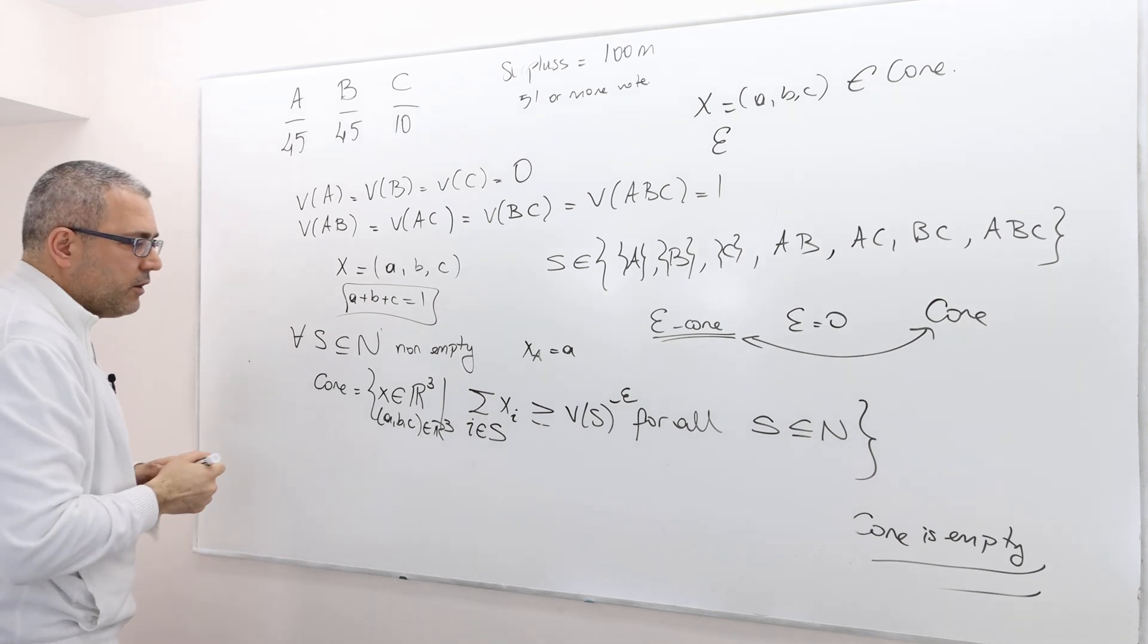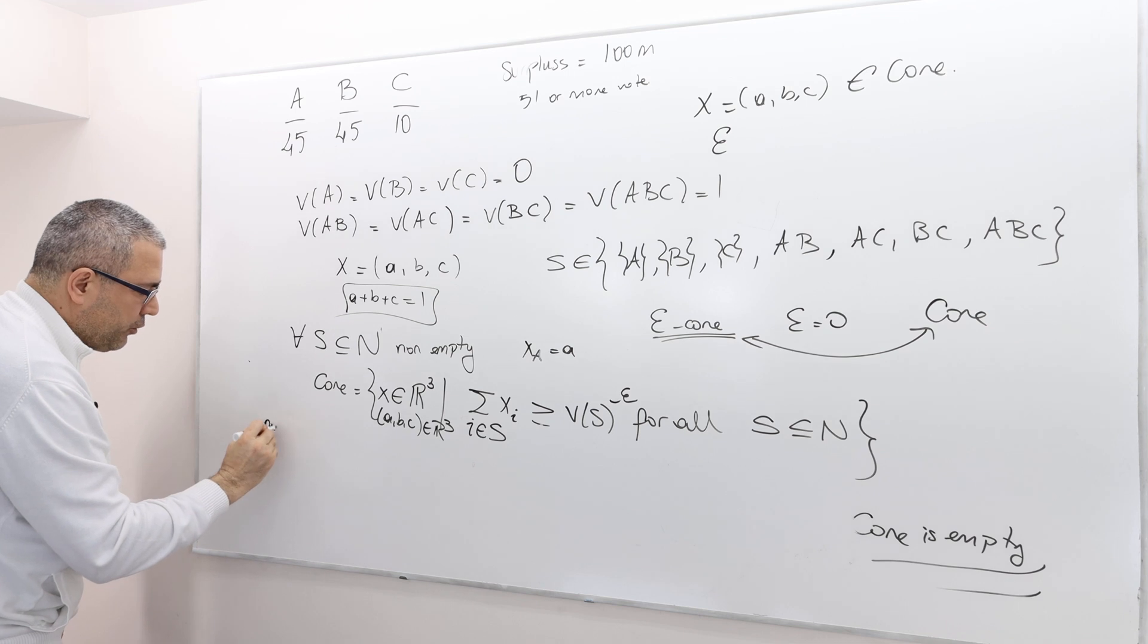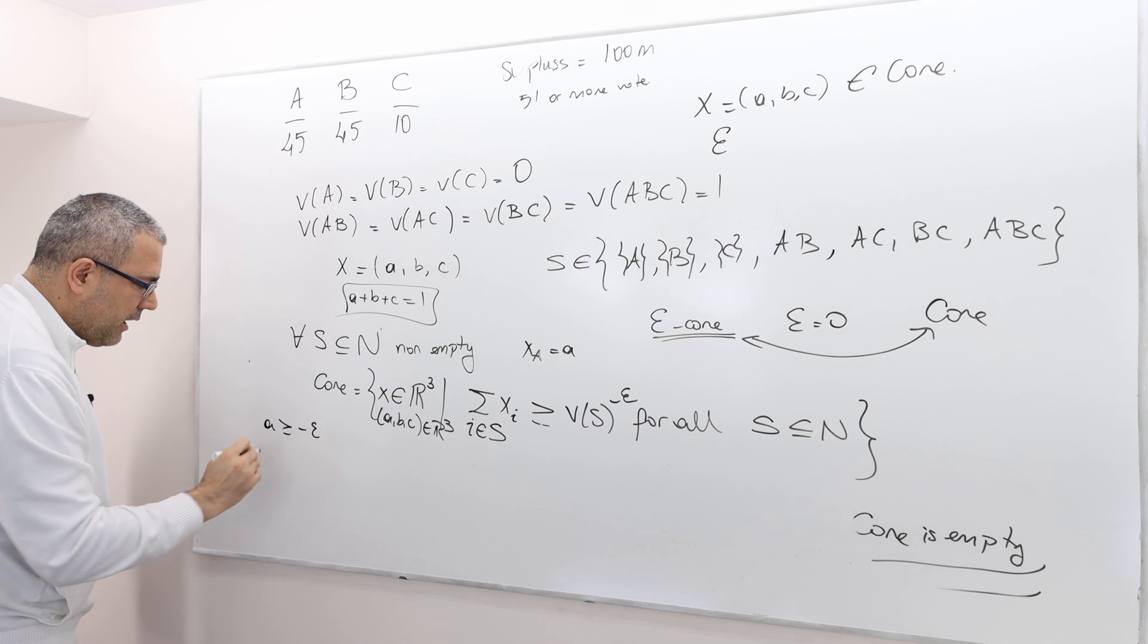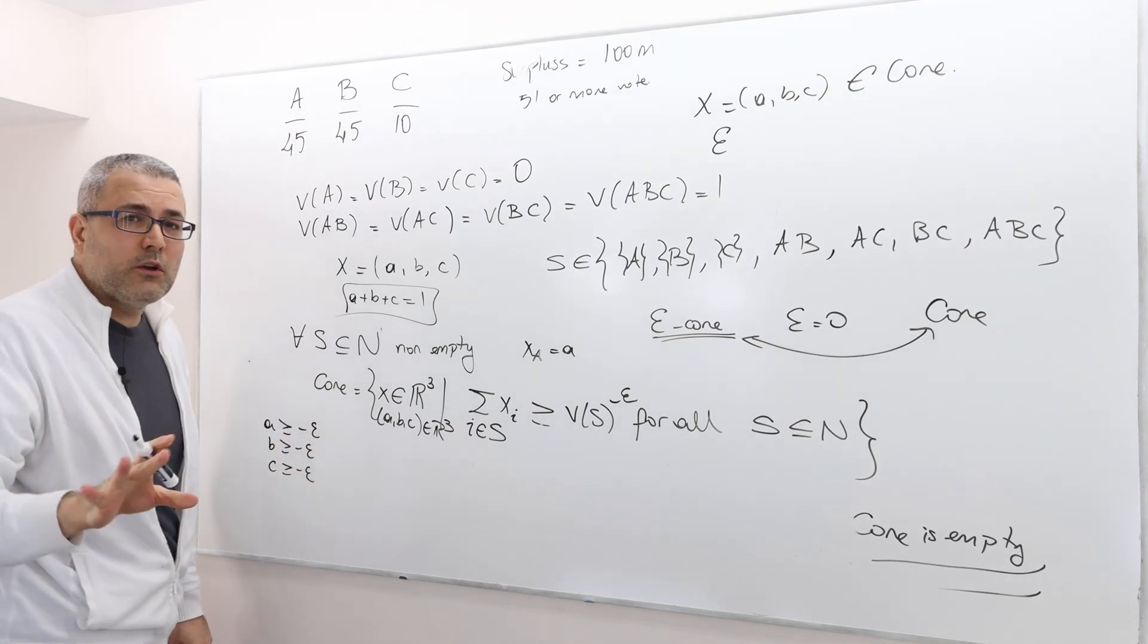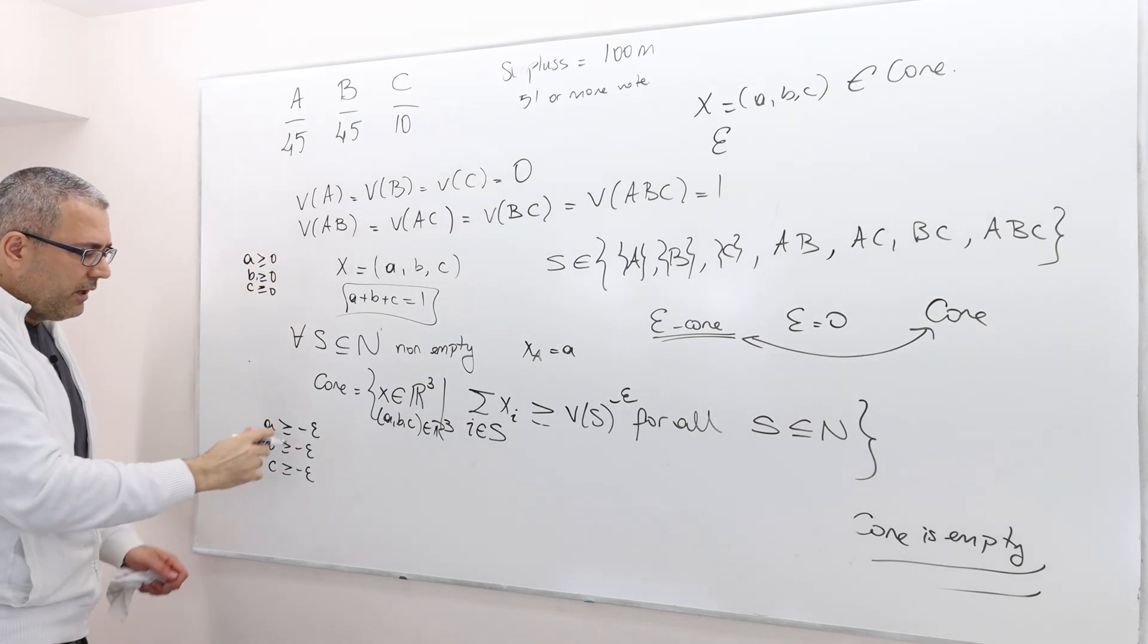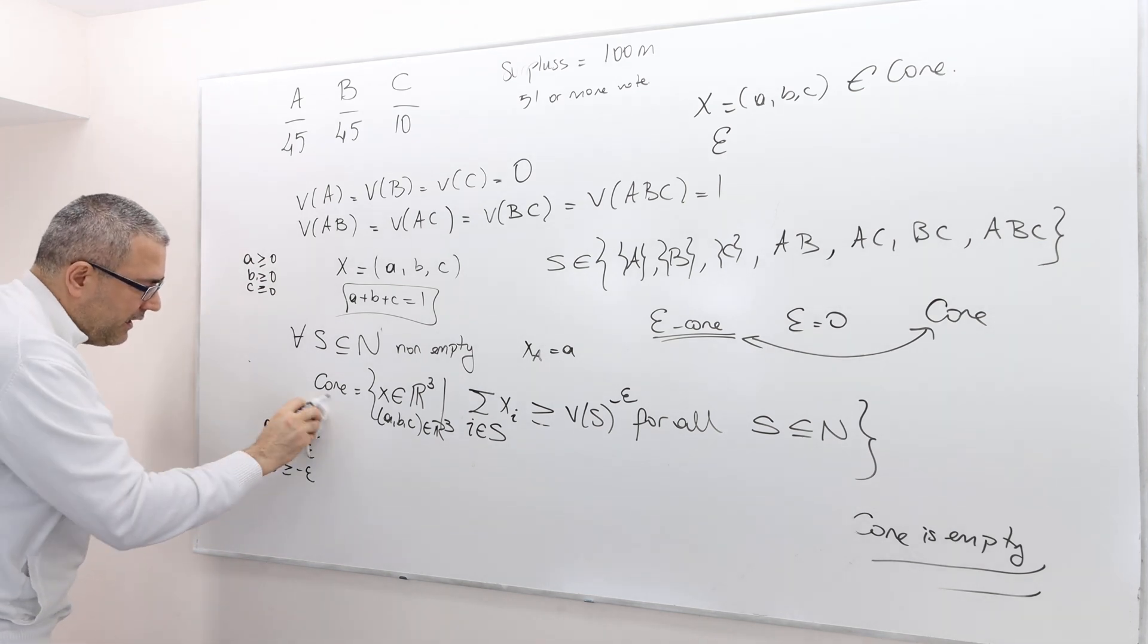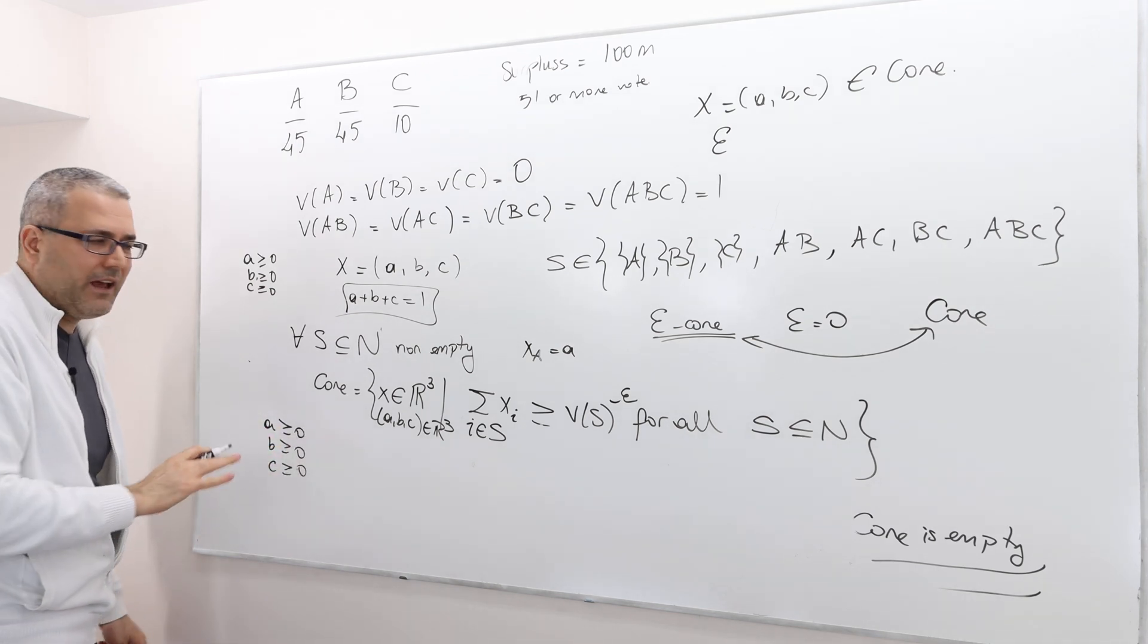Well, it would be the following. So remember, if we consider the singletons, A should be greater than or equal to V of A minus epsilon. So it's minus epsilon. B is greater than minus epsilon. C is greater than minus epsilon. But don't forget, feasibility already requires me that A, B, and C, these are all greater than 0. So this minus epsilon sign together with this in fact means these guys are going to be 0, because we are not allowed to have them minus.